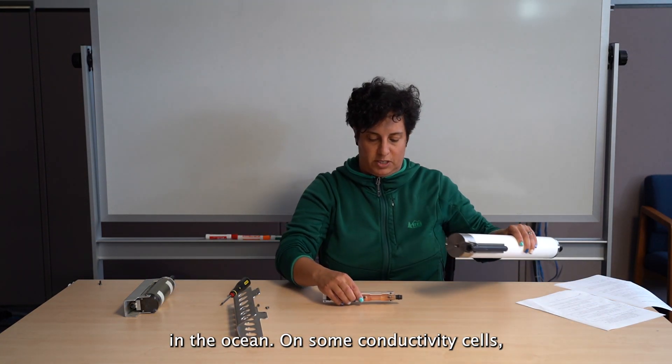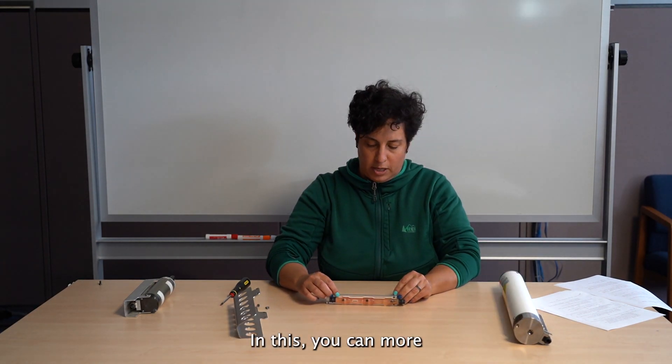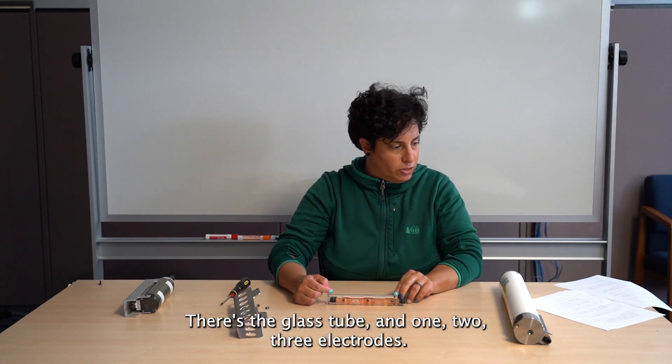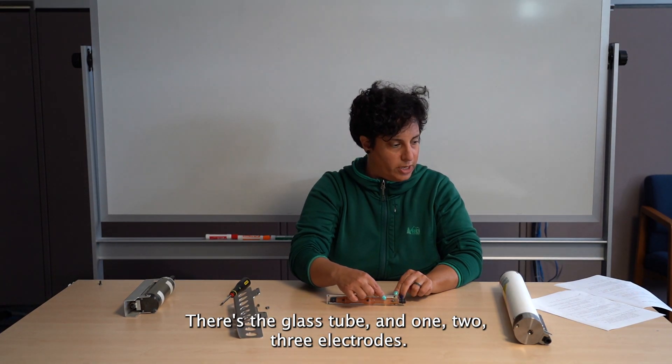On some conductivity cells, we use a pink epoxy like this one. In this, you can more clearly see the internal parts of the conductivity cell. There's the glass tube and one, two, three electrodes.